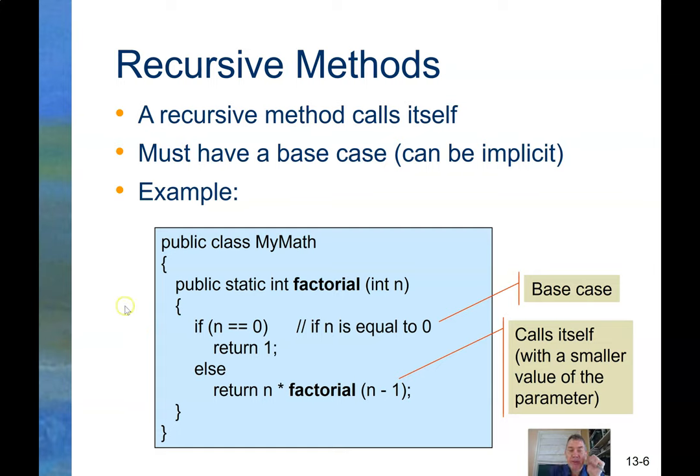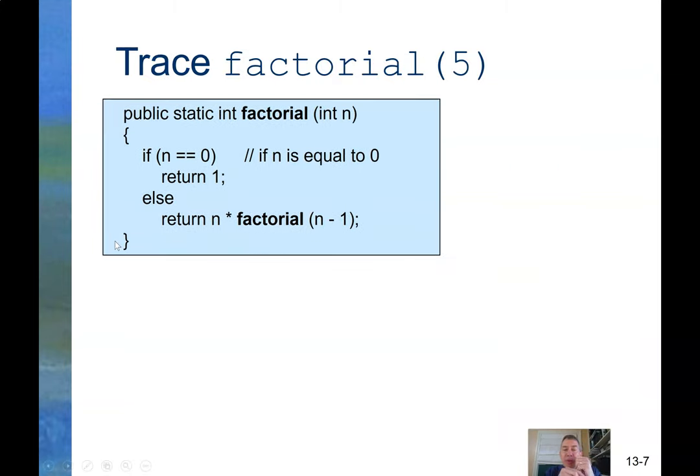Let's walk through that with factorial of 5. In fact, 5 is not 0. So it doesn't return 1. Instead, it returns 5 times factorial of 4.